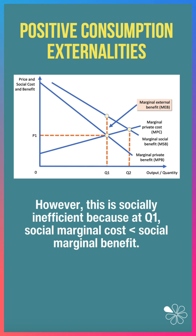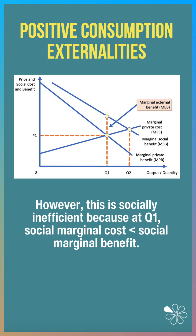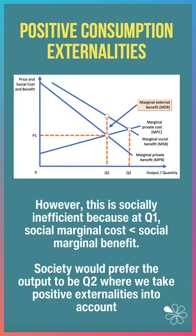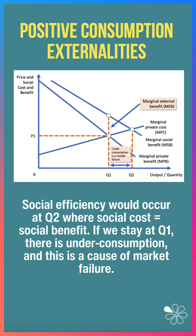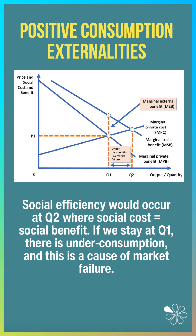However, this is socially inefficient because at Q1, the social marginal cost is less than the social marginal benefit. Society would prefer the output to be Q2, where we take positive externalities into account. Social efficiency would occur at Q2, where social cost equals social benefit.